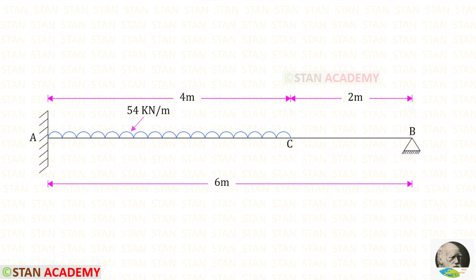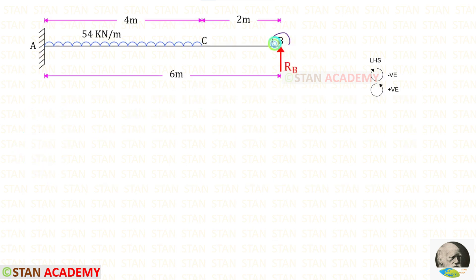Hello everyone. Today we are going to analyze this propped cantilever beam. In this beam there is a uniformly distributed load of 54 kilo Newton per meter. It acts for a distance of 4 meters from the left support. From point B about point A, we are going to find the moments and then draw the diagrams.